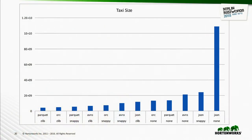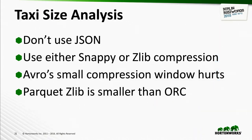ORC and Parquet both use run-length encoding in dictionaries, and all formats have general compression. There's a trade-off: Zlib gives tighter compression but is slower, while Snappy offers some compression with faster speed. For the taxi dataset, JSON with no compression was the absolute worst. Parquet with Zlib did the best, and the others were in the middle.